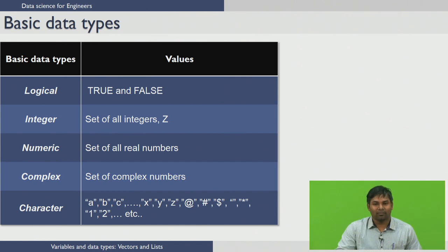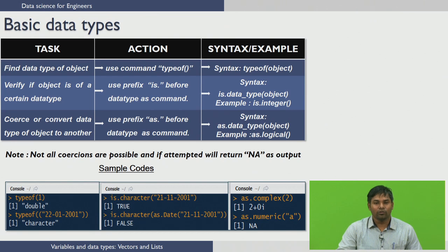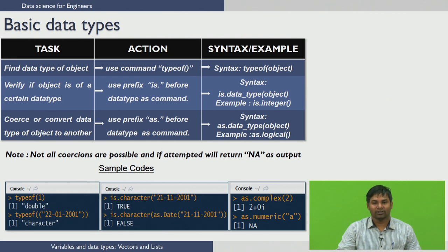There are several tasks that can be done using data types. The first task is to find the data type of an object, which is done using the typeof() function — you pass the object as an argument. The second task is to verify if an object is of a certain data type, for which you prefix is. before the data type as a command. The syntax is is.datatype(object).